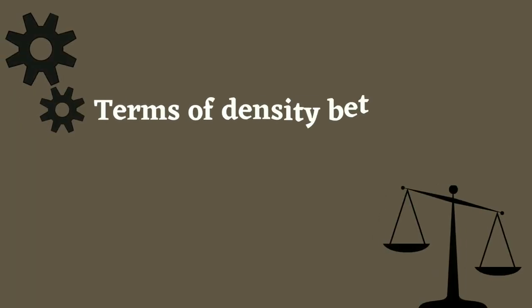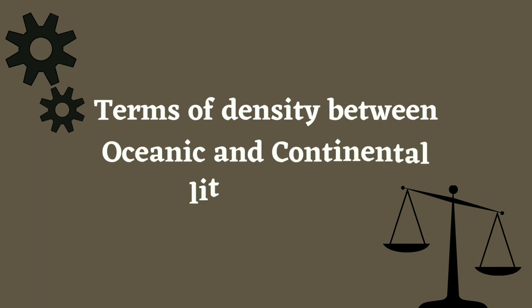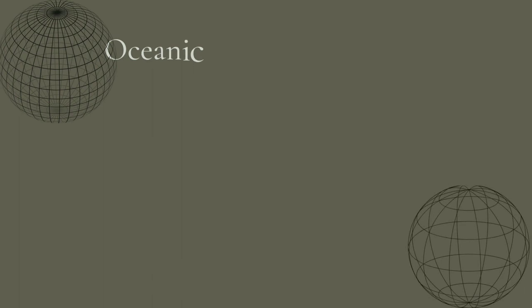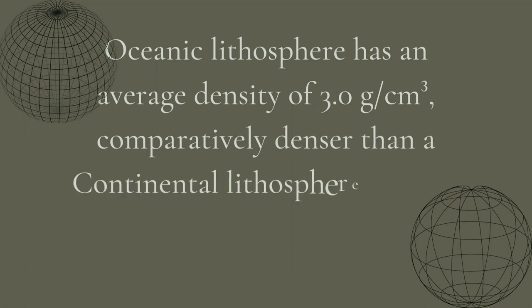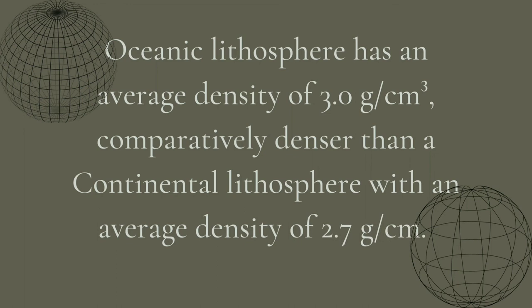In terms of density between oceanic and continental lithosphere, the oceanic lithosphere has an average density of 3.0 grams per cubic centimeter, comparatively denser than continental lithosphere with an average density of 2.7 grams per cubic centimeter.